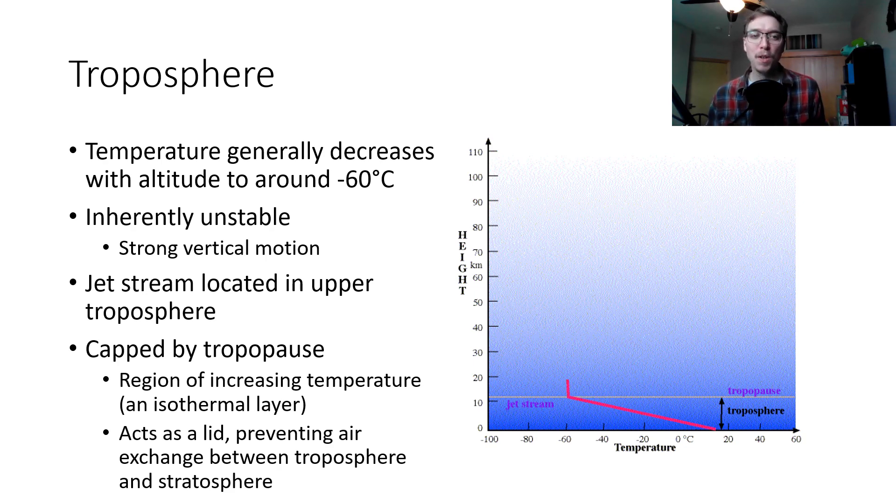And our jet stream is located in the upper troposphere. Above that, we're capped by something called the tropopause. That's a region of increasing temperature, an isothermal layer. It acts as a lid preventing air exchange between the troposphere and the stratosphere, our next layer. But within the troposphere is one more important thing that we need to consider and think about. Because of how wind moves across our planet, we have something called the planetary boundary layer.